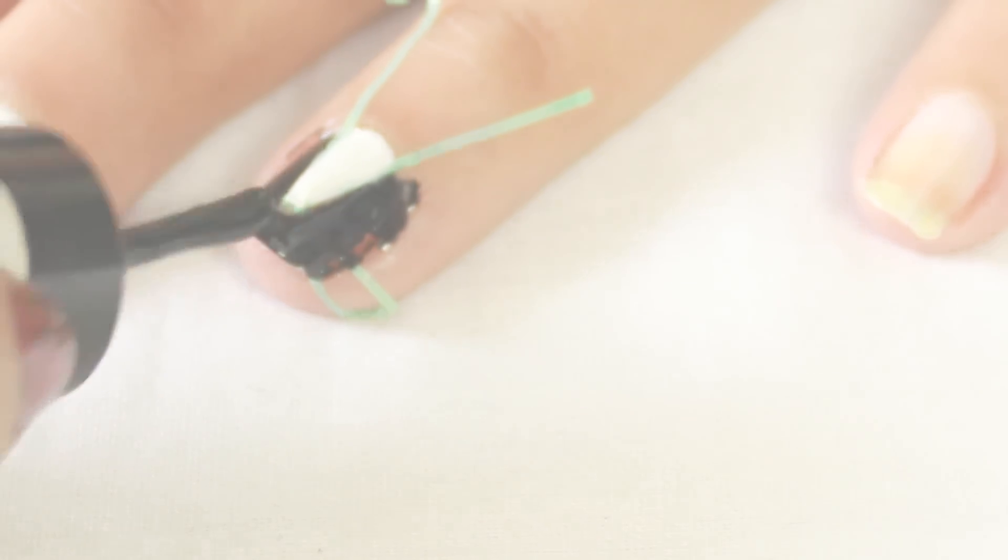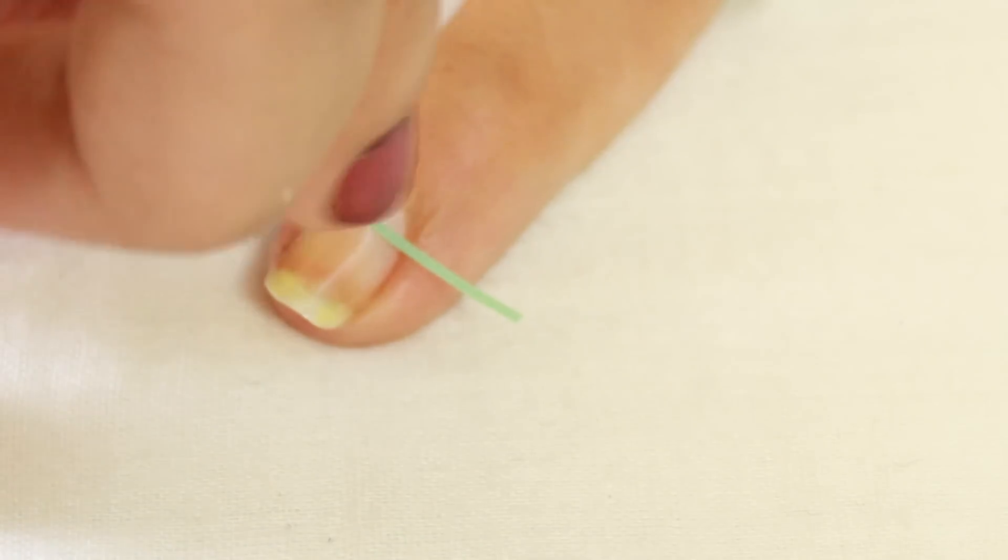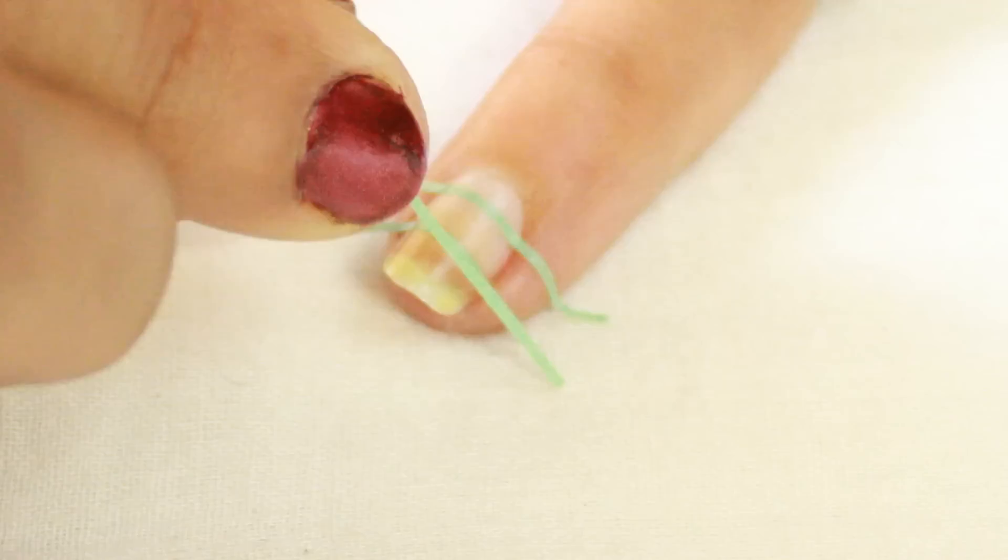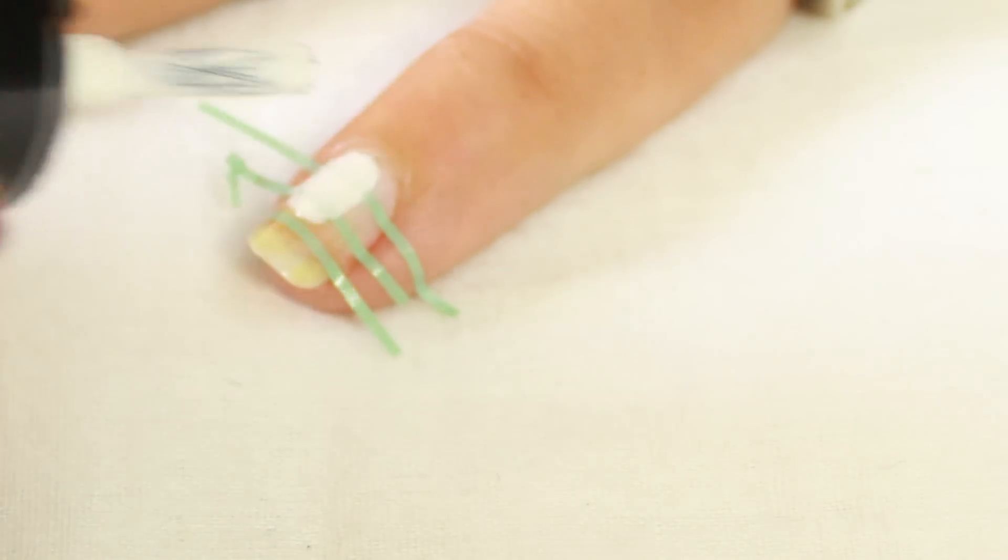On the little finger, I'm applying three striping tapes horizontally, then applying white on half of the nail and black on the tip.